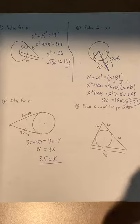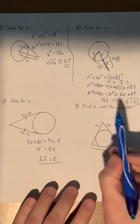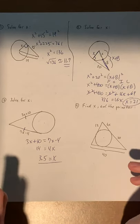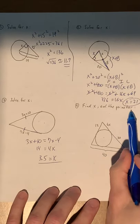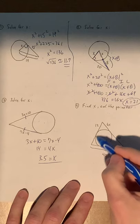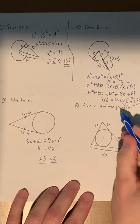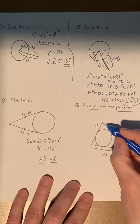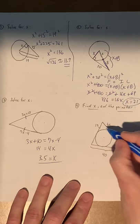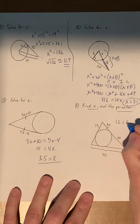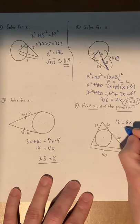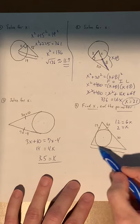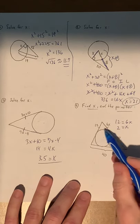And number 4. Number 4, we have to find two things. We have to solve for x, which means we're probably going to have to make an equation, and get the perimeter. Now the perimeter of the whole triangle we need, we need x first. Now x is up here. And these two are congruent. So we set 12 equal to 6x, and x is simply 2.